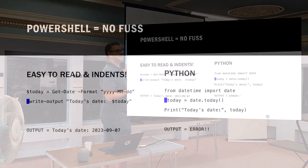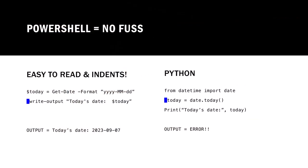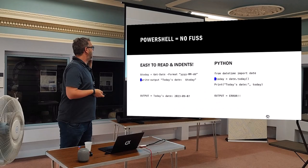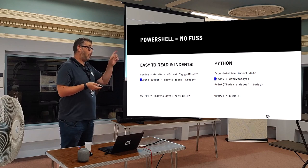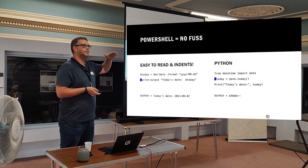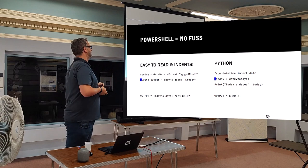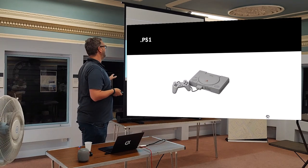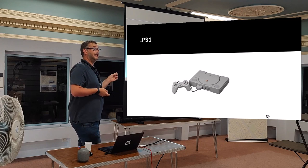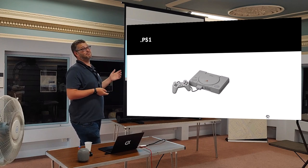In two lines of code I can get today's date printed out. In Python I'd have an indent — hello, my little friend — and we get an error. PowerShell doesn't really care where the code is, as long as it's in some sort of linear structure. And my favourite part — gets me giggling every time — is the file extension: PS1. I love that.